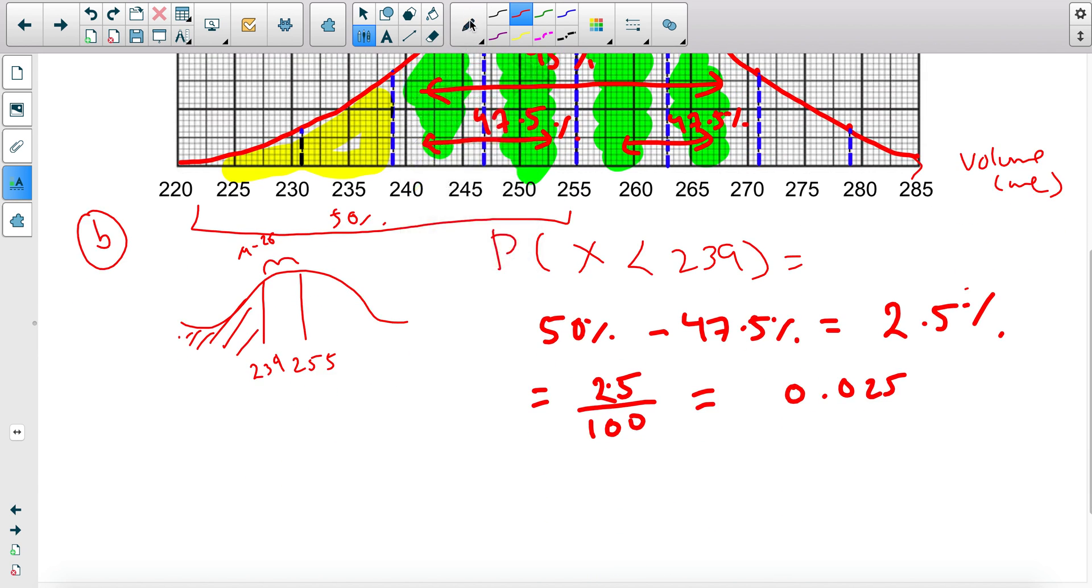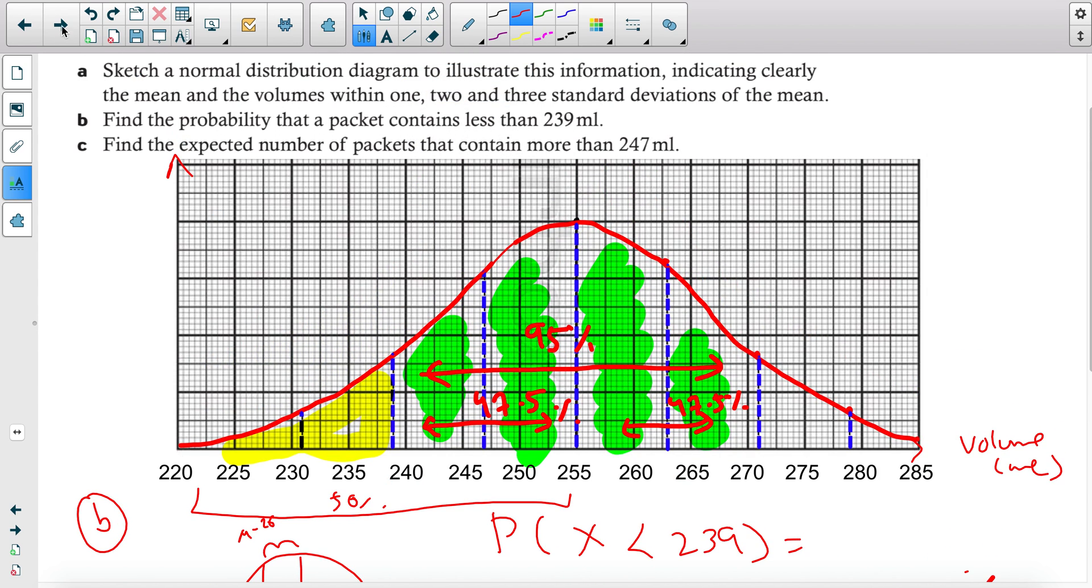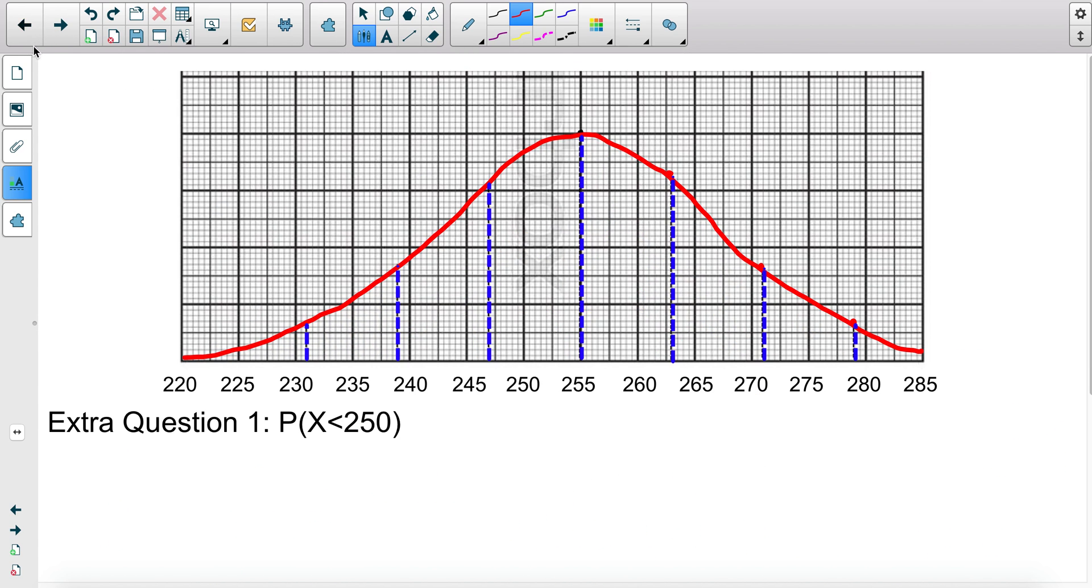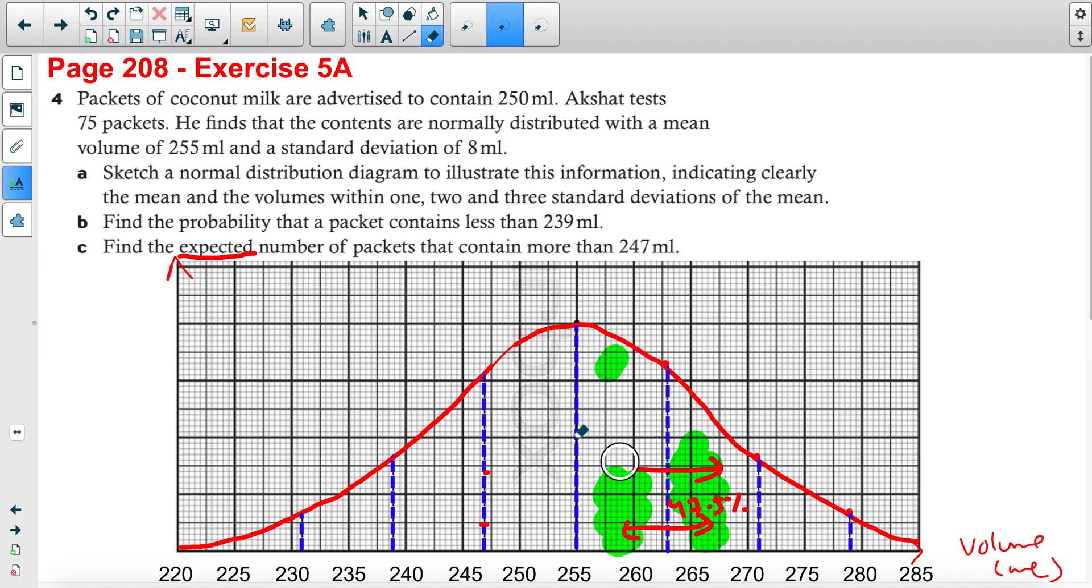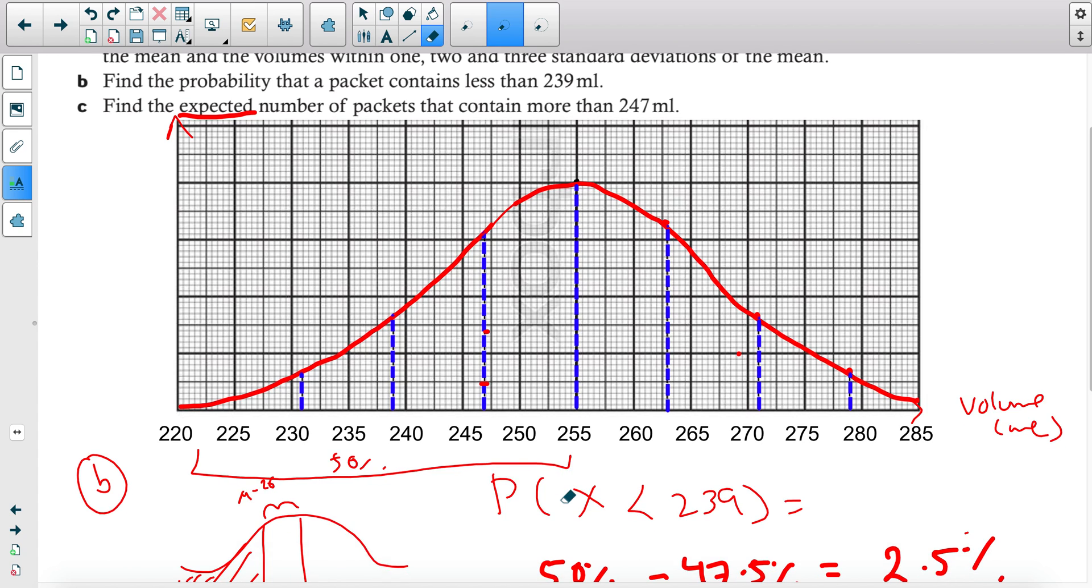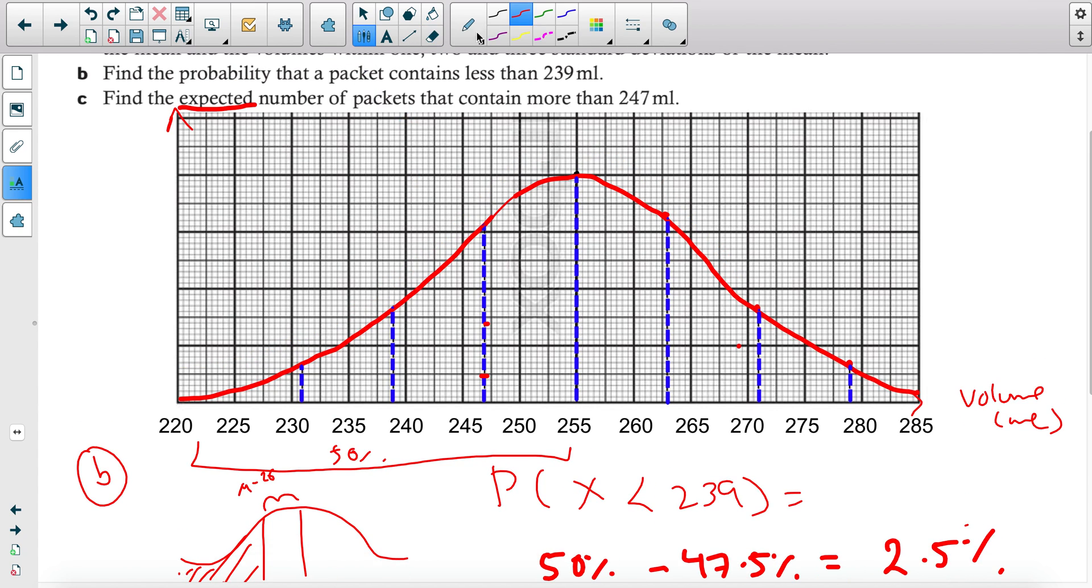For part C, it asks to find the expected number of packets that contain more than 247. This time we want the expected value, so it's slightly different. You need to find the probability and also multiply it by the expected value. First let's find the probability. The probability packets contain more than 247—again, this is part of the standard deviations you found. 247 is here.